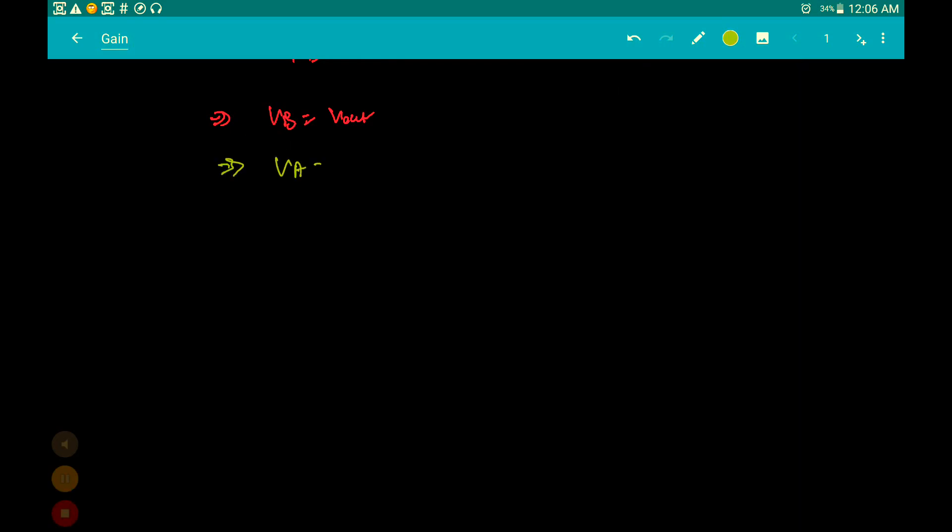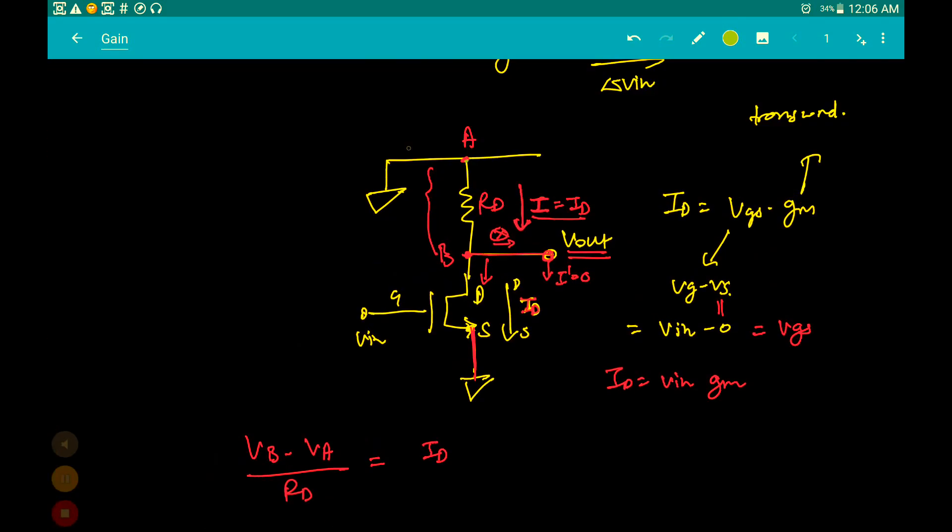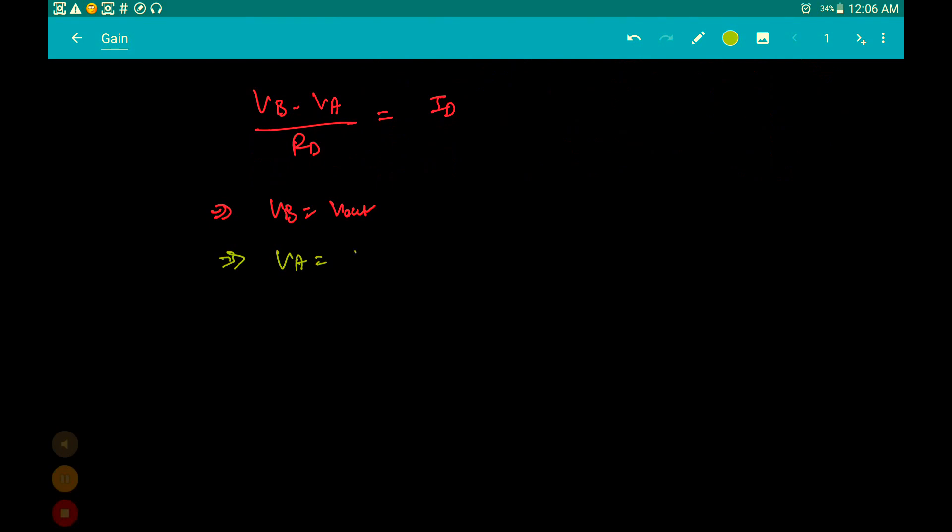What is VA? VA is connected to ground over here. Therefore VA is equal to 0. Putting it in: VB is Vout minus VA is 0, upon RD equals ID.